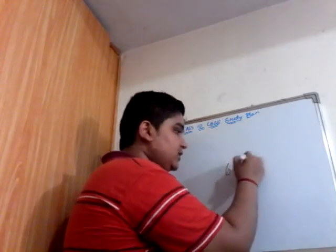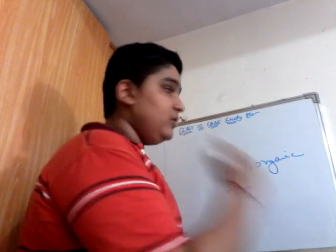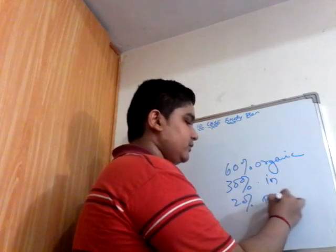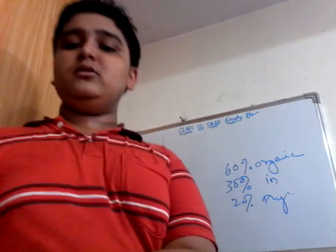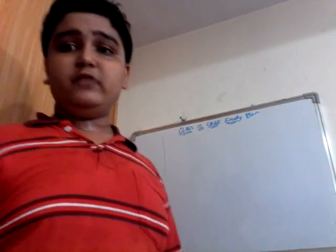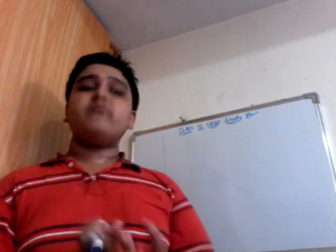In physics, every single attempt at a numerical is a fresh attempt. Unlike maths, they won't simply give you two values and ask for a third — they might not give you one unit, requiring you to apply four or five formulas to find the answer. To handle this, solve numerous numericals — NCERT textbook questions, examples, and exemplar problems. If you do all of these, physics won't be that difficult.